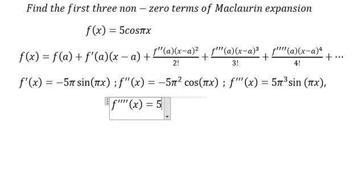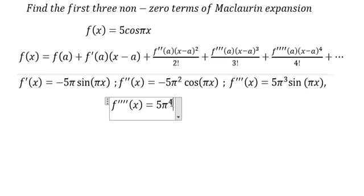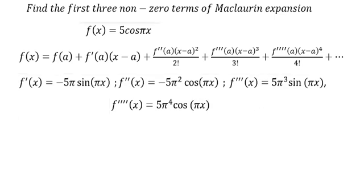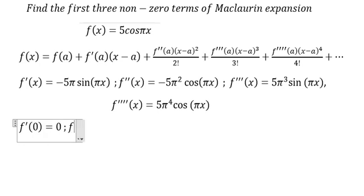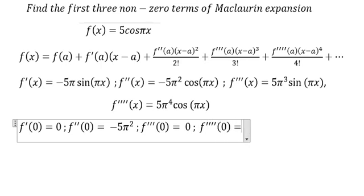And this should be about 5b over 4. Now we put x equal to 0 in here. So the first derivative is about 0. Second derivative: minus 5b squared. Third derivative: it's about 0. Fourth derivative: it's about 5b over 4.